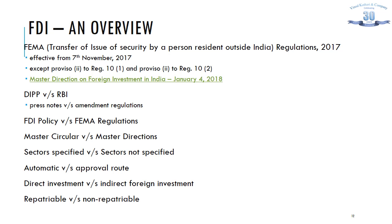Regarding sector specified versus sector not specified: in the FDI consolidated policy, several sectors have a specified percentage of permitted foreign investment. For example, banking (public sector) is permitted only up to 20% under government route, and banking (private sector) is permitted up to 74%. For sectors not specified in the regulations, it has been clearly stated that 100% FDI is allowed under the automatic route.